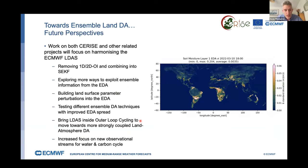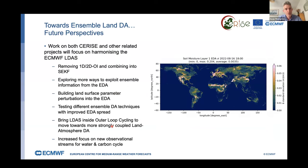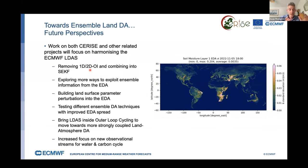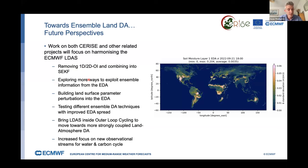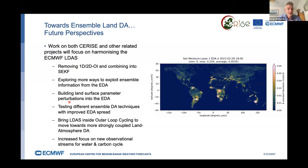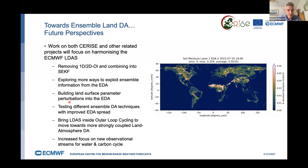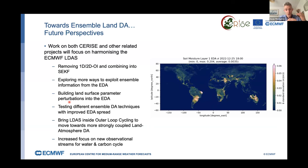The main targets for the ECMWF LDAS are: removal of the 1D and 2D OI and combining them within a single harmonized data assimilation scheme — the SEKF in the first instance, moving towards an ensemble technique in the future. We are actively exploring ways to exploit more ensemble information from the atmospheric ensemble of 4D-VARs. Although the EDA is great, for some land surface variables it is quite under-spread, so we are looking at land surface parameter perturbations — for example perturbing the LAI for each ensemble member — with initial experiments showing nice results in increasing spread.